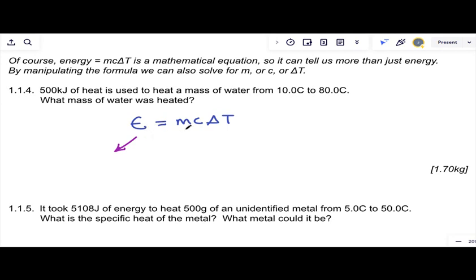You can manipulate the formula before you even touch the numbers. If I want to solve this for m because I'm trying to find a mass of water, I want m alone so divide the right side by c delta t. That's legal as long as I also divide the left side by c delta t. C's cancel, delta t's cancel, and I get mass equals energy over c delta t.